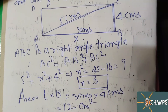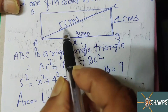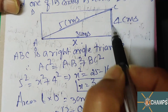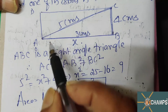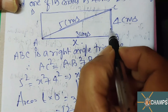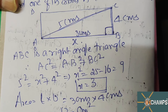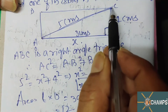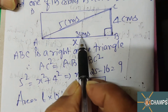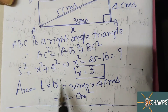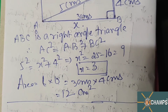Area equals length into breadth: 3 cm into 4 cm equals 12 cm square. For a rectangle, diagonal is given as 5 cm, one side is 4 cm. ABC is a right angle triangle, so I can use Pythagoras theorem. Hypotenuse square equals side square plus side square. From this you get x equals 3. Area of rectangle equals length into breadth equals 3 cm into 4 cm equals 12 cm square.